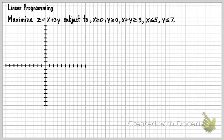Linear programming. Maximize z equals x plus 3y subject to x greater than or equal to 0, y greater than or equal to 0,